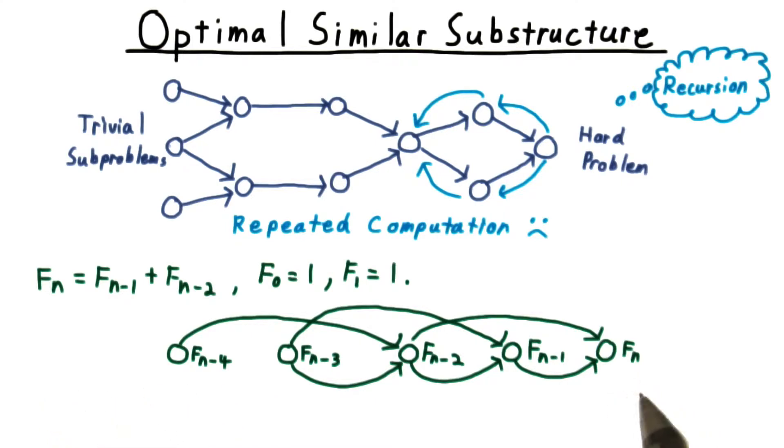Thinking about how the recursion will operate here, notice that we need to compute F sub n minus 2 once for F sub n and once also for F sub n minus 1, so there's going to be some repeated computation here. And it's going to get worse and worse the further to the left we go.